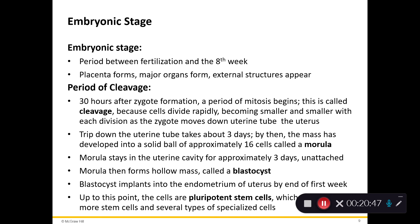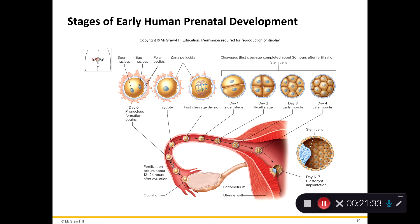The blastocyst embeds itself into the endometrium of the uterus by the end of day seven — the end of your first week. The cells of the blastocyst are all stem cells, specifically pluripotent stem cells — these can become other stem cells and eventually all the different tissues and organs of your body. Things like the basal cells in skin or osteogenic cells in bone were originally pluripotent stem cells from your blastocyst phase.